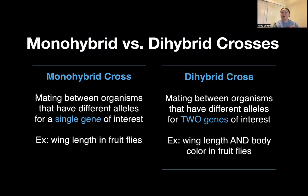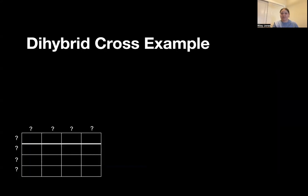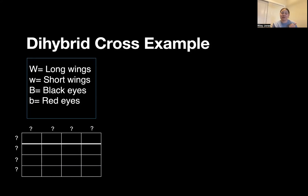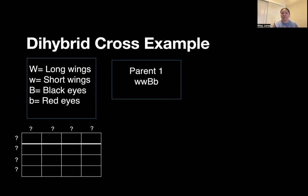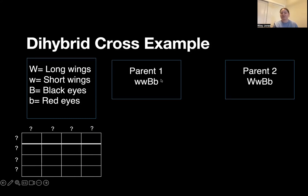So that was a monohybrid cross. A monohybrid cross is a mating between organisms that have different alleles for a single gene of interest — wing length in a fruit fly is an example of this. A dihybrid cross is a mating between organisms that have different alleles for two genes of interest, and you can do this for wing length and body color of fruit flies. So a dihybrid cross is again a Punnett square, but it looks a little bit scarier than the one we just did. If we're looking at fruit flies, we want to look at wing length and the colors of their eyes. We have one parent with homozygous recessive for wings and heterozygous for eye color, and another parent that's heterozygous for both wing length and eye color.